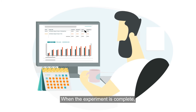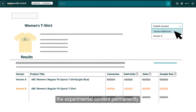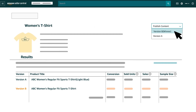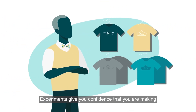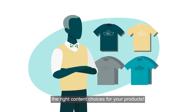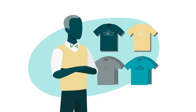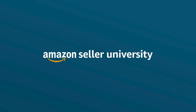When the experiment is complete, click on Publish the winning content to replace the previous content with the experimental content permanently. Setup is quick and results are easy to understand — experiments give you confidence that you are making the right content choices for your products. You now know how to create and manage experiments. Thank you and happy selling!